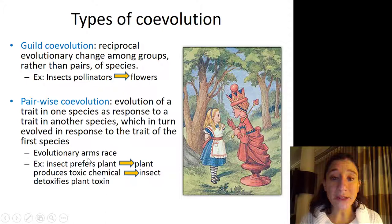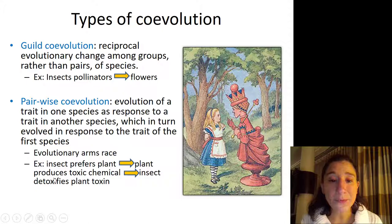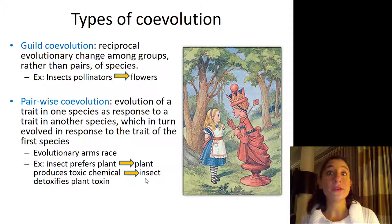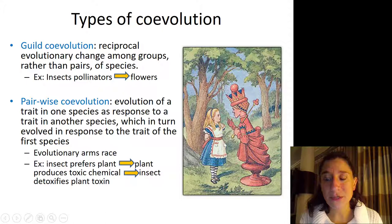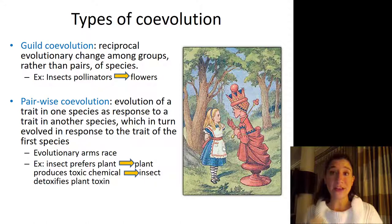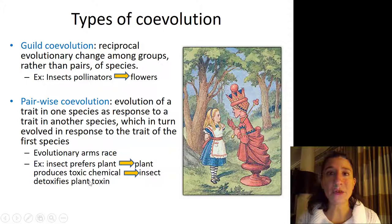Another instance could be an evolutionary arms race. An example of this is if an insect prefers to eat a certain plant, then the plant would produce a toxic chemical to stop the insect from eating it, and then the insect would evolve to detoxify that plant toxin. In turn, that plant might develop a new toxin or higher doses of it. This is sometimes called the Red Queen Hypothesis from Alice in Wonderland — the Red Queen has to run faster and faster just to stay in place. That's the idea of this evolutionary arms race: you have to keep one-upping and co-evolving with your enemy so that you are able to co-exist.